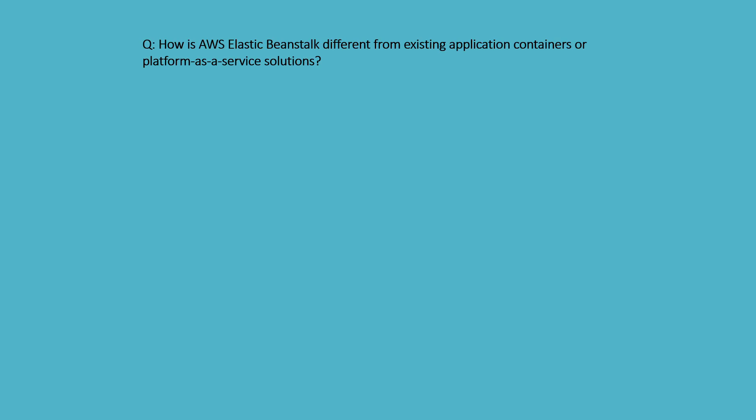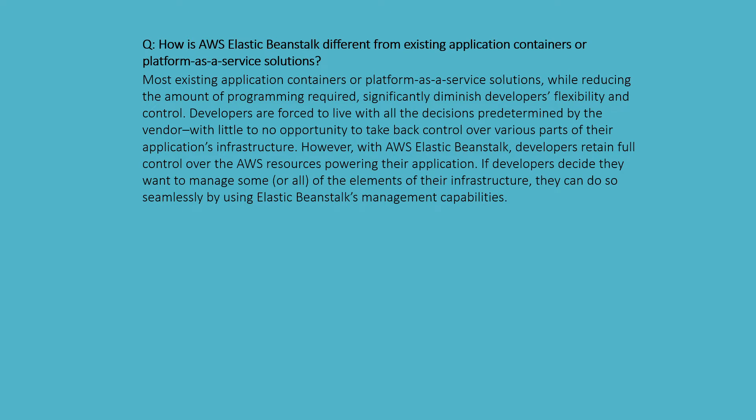How is Elastic Beanstalk different from existing application container or platform-as-a-service solutions? Most existing platform-as-a-service solutions reduce programming requirements but significantly diminish developer flexibility and control. Developers are forced to live with decisions predetermined by the vendor. However, with AWS Elastic Beanstalk, developers retain full control over the AWS resources powering their application and can manage infrastructure elements seamlessly using Beanstalk's management capabilities.